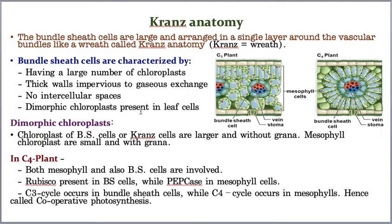A very important feature is dimorphic chloroplasts. The same leaf contains two types of chloroplasts. The first type, in mesophyll cells, are regular chloroplasts with thylakoid membranes arranged in groups called grana, interconnected by stroma lamellae. The second type, in bundle sheath cells, lack grana — only stroma lamellae are present.